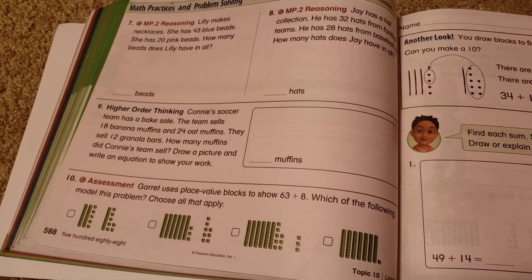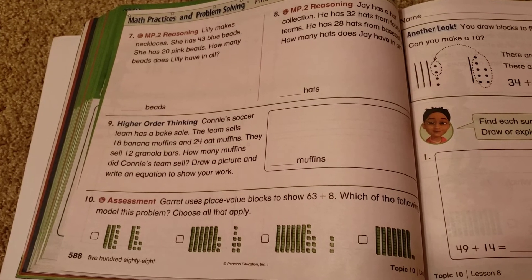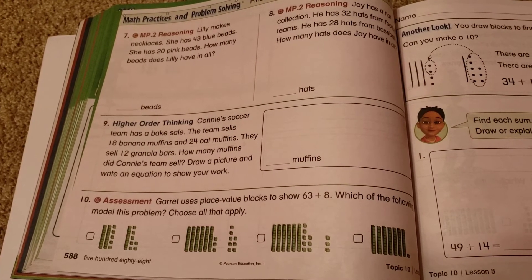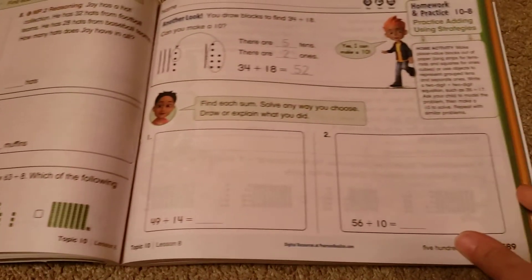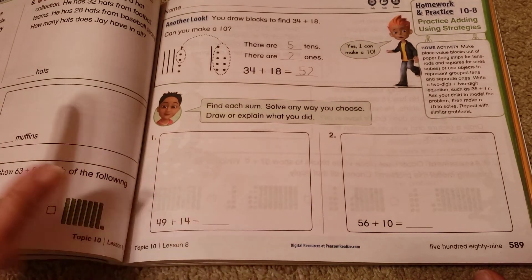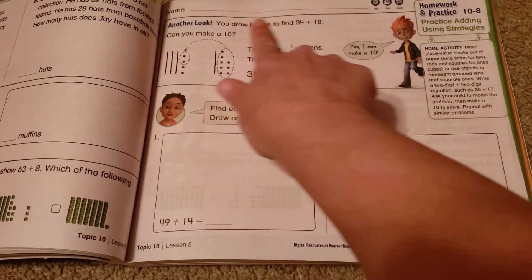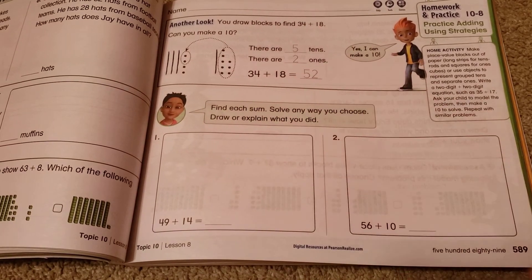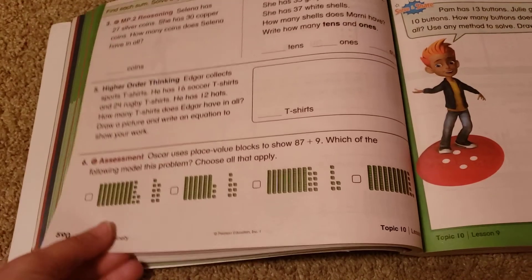On page 588, you have some word problems. So the same thing. They're asking you to solve two-digit addition problems and you can solve them using any strategy that we just talked about. It doesn't matter which way you do it. Then you're going to go on, you're going to do the homework and practice section, which looks just like the pages we just did together. On page 589, there is another little explanation up at the top and then you're going to be solving those in the boxes any way that you choose.